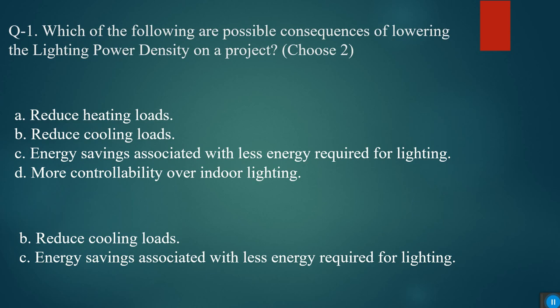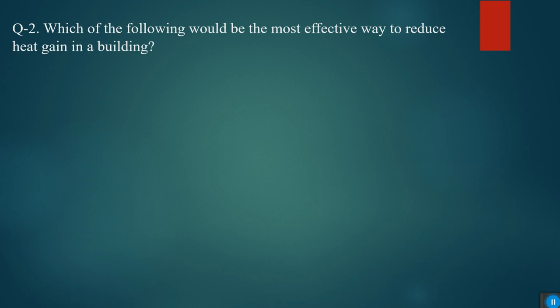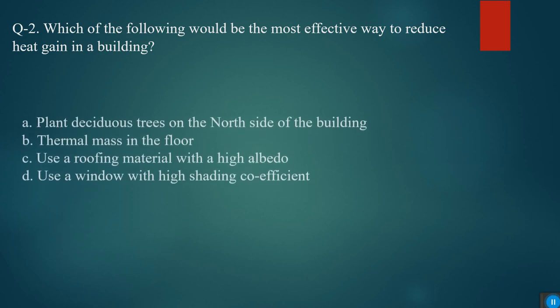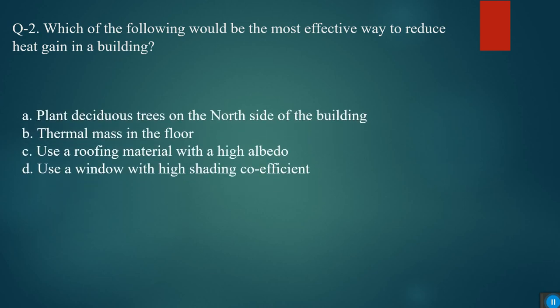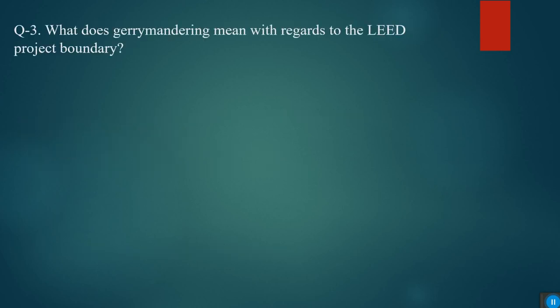Next question: which of the following would be the most effective way to reduce heat gain in a building? Options are plant deciduous trees on the north side of the building, thermal mass in the floor, use a roofing material with a high albedo, or use a window with high shading coefficient. The answer is use a roofing material with a high albedo.